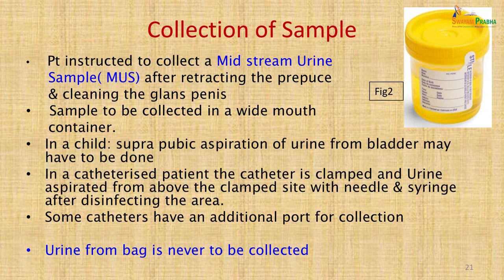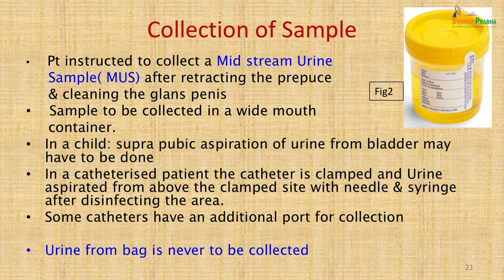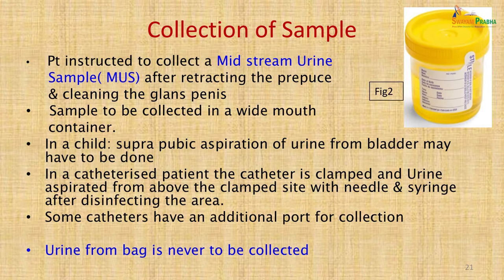The patient was instructed to collect a mid-stream urine sample after retracting the prepuce and cleaning the glans with plain water — no antiseptic or soap, as this can affect culture results. The sample is collected in a wide-mouth labeled container with patient details. The mid-stream sample is collected by letting the first flow pass through, collecting the middle part, then letting the last flow pass. In catheterized patients, the catheter is clamped and urine aspirated from above the clamp with a needle and syringe after disinfecting the area. Urine from the bag is never to be collected.